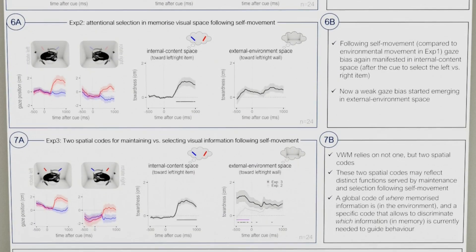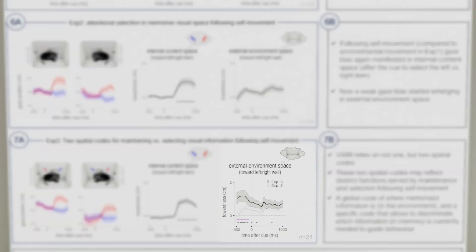In experiment three, like in most natural situations, the memory items remained in the environment until after participants turned to the adjacent wall, rather than only being flashed briefly. We again observed a clear bias in internal content space. However, we now also observed the pronounced gaze bias in the direction of the location of the memory items in the external environment.